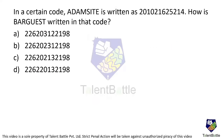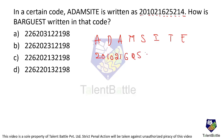In a certain code, 'Adam's site' is written as 2, 0, 1, 0, 2, 1, 6, 2, 5, 2, 1, 4. How is 'bad guest' written in that code? So first let us take the word they gave and try to identify what the logic is. Then only we will be able to apply the same logic to 'bad guest' and identify the answer.